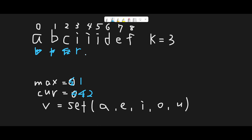When right pointer reaches index 3, we compute right minus k, which is 3 minus 3 equals 0, and look at character at index 0. That character is 'a', which is in the vowels set, so we add minus one to current_vowels. This is because the max window length should be 3, so index 0 is already out of bounds. After subtracting, current_vowels is now 1.